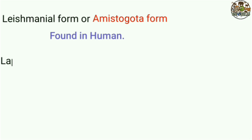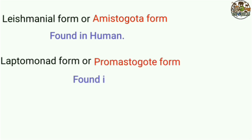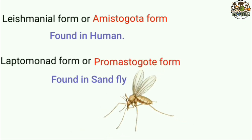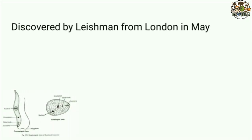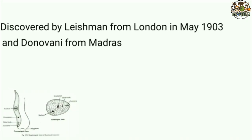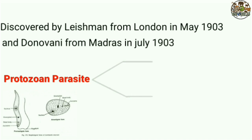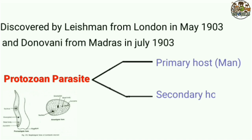The Leishmanial form or amastigote form is found in humans, while the leptomonad form or promastigote form is found in sand fly. It was discovered by Leishman from London in May 1903 and Donovan from Madras in July 1903.